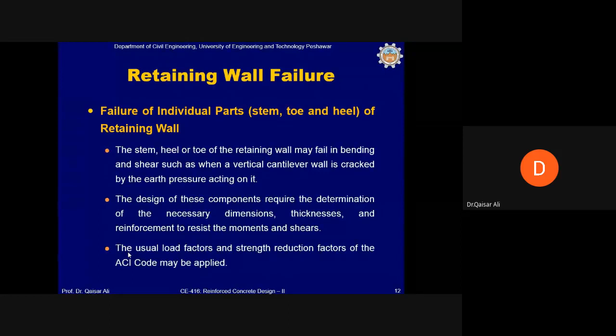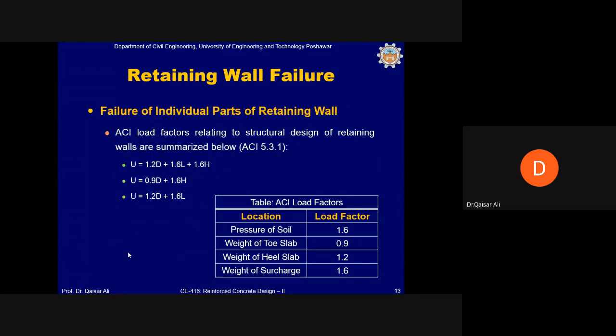Structural failure of individual parts can be avoided by designing the stem, heel, and toe according to the ACI code, determining the necessary dimensions and reinforcement to resist moments and shear. The ACI load factors for retaining wall structural design (ACI 5.3.1) use 1.6 for horizontal soil pressure (H), so the load combination becomes 1.2D + 1.6L + 1.6H, where all weights of retaining wall components are multiplied by 1.2 as dead load, and horizontal backfill pressure is multiplied by 1.6.